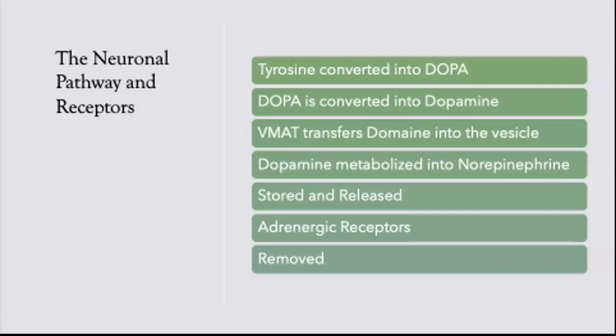The vesicle is now filled with dopamine, and if the neuron's job was simply to secrete dopamine, the transaction would be done. However, since we are talking about a post-ganglionic sympathetic neuron, we want to make norepinephrine. So dopamine is then converted by dopamine beta-hydroxylase into norepinephrine. At this point, the norepinephrine is stored in the terminals and released into the postsynaptic cleft when an action potential depolarizes the membrane and calcium flows into the vesicle. Calcium interacts with the vesicle, causing it to fuse with the presynaptic membrane and release norepinephrine into the synaptic cleft.